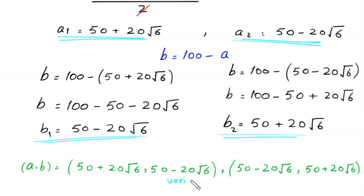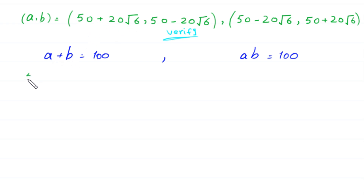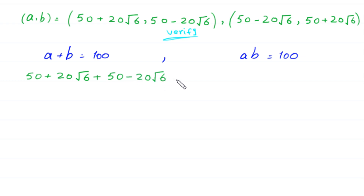Let's verify these values of A and B by putting them into the original equations: A plus B equals 100 and AB equals 100. First, substituting into A plus B: (50 plus 20 times square root of 6) plus (50 minus 20 times square root of 6). The positive and negative 20 times square root of 6 cancel, and 50 plus 50 gives 100 equals 100. Verified.